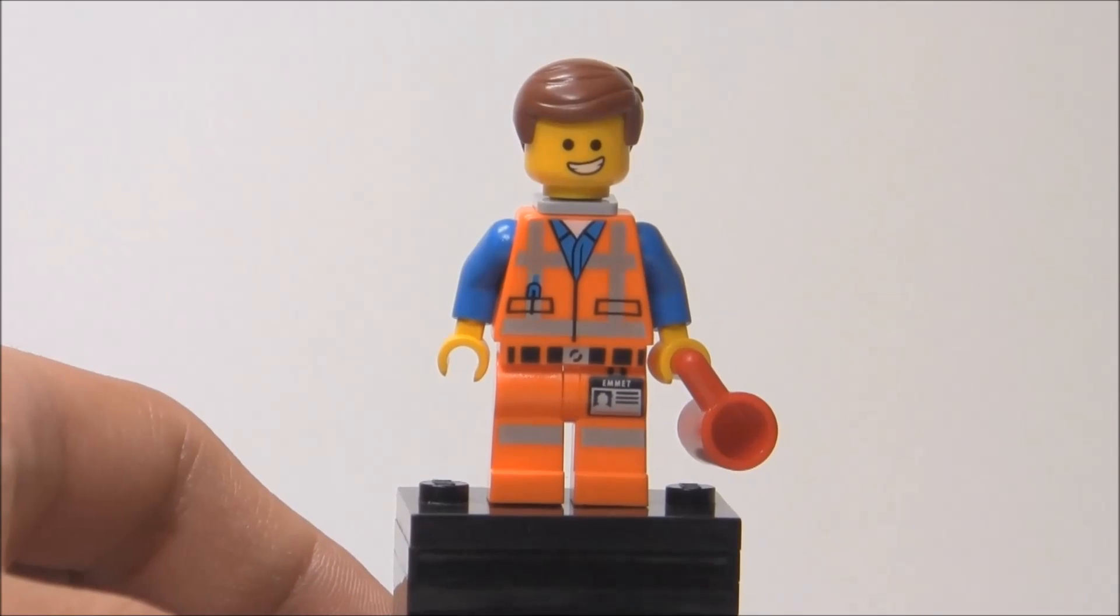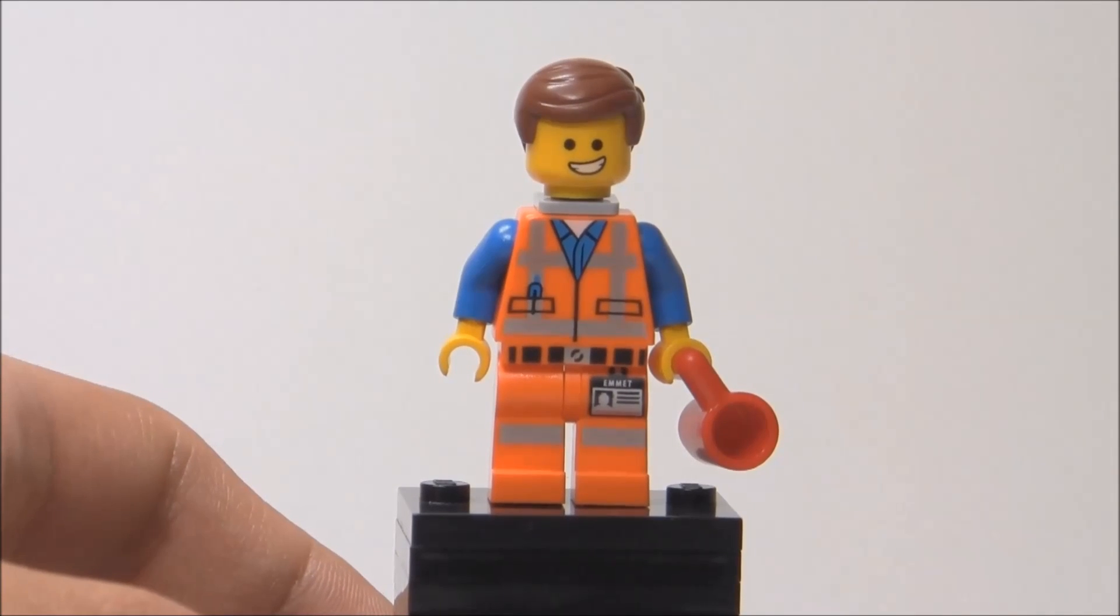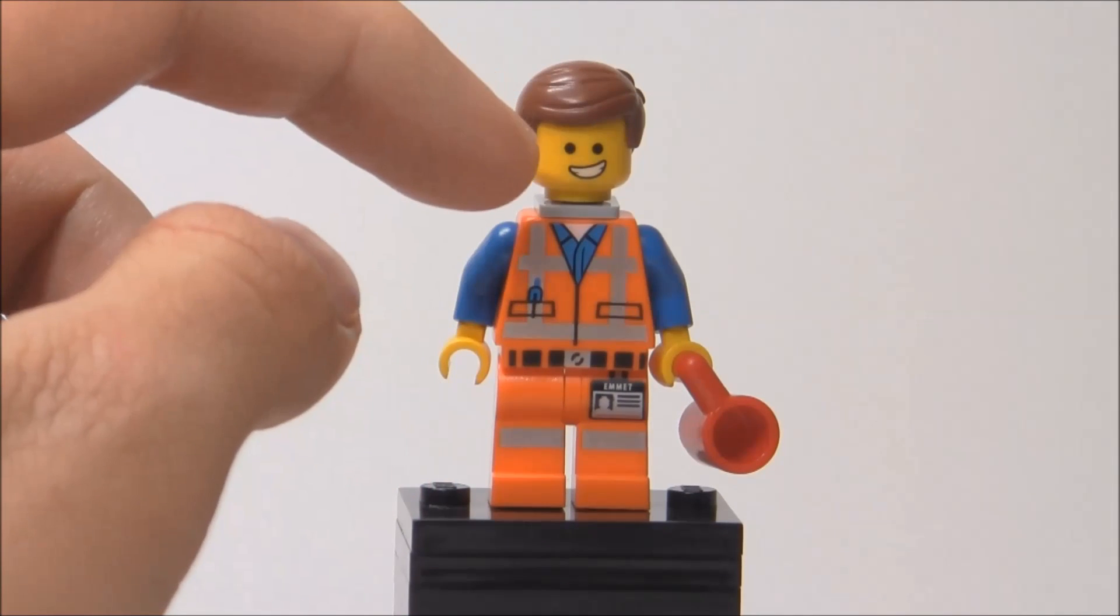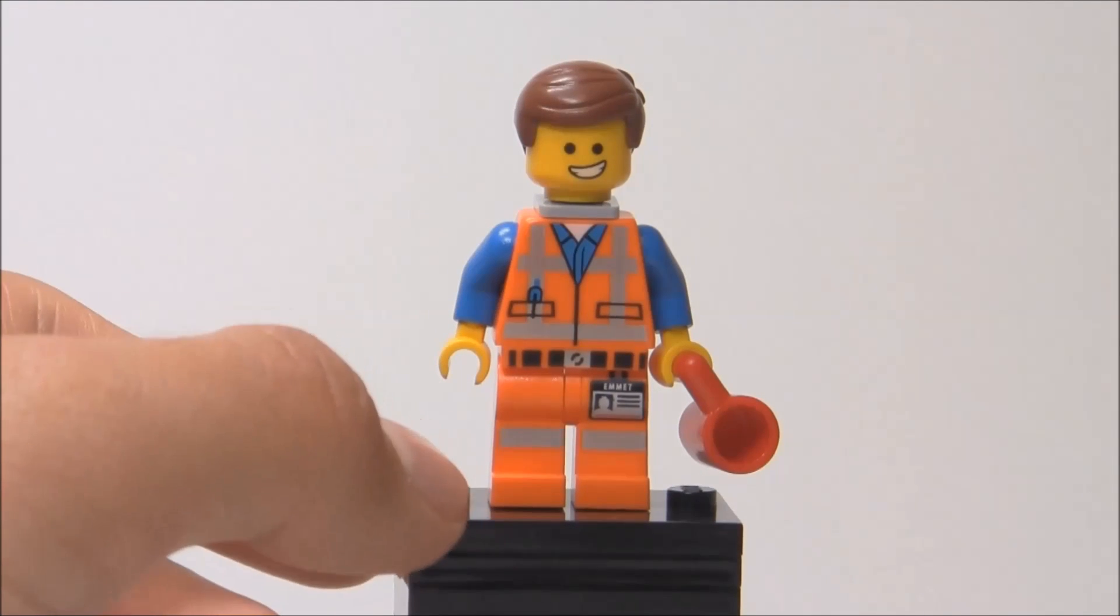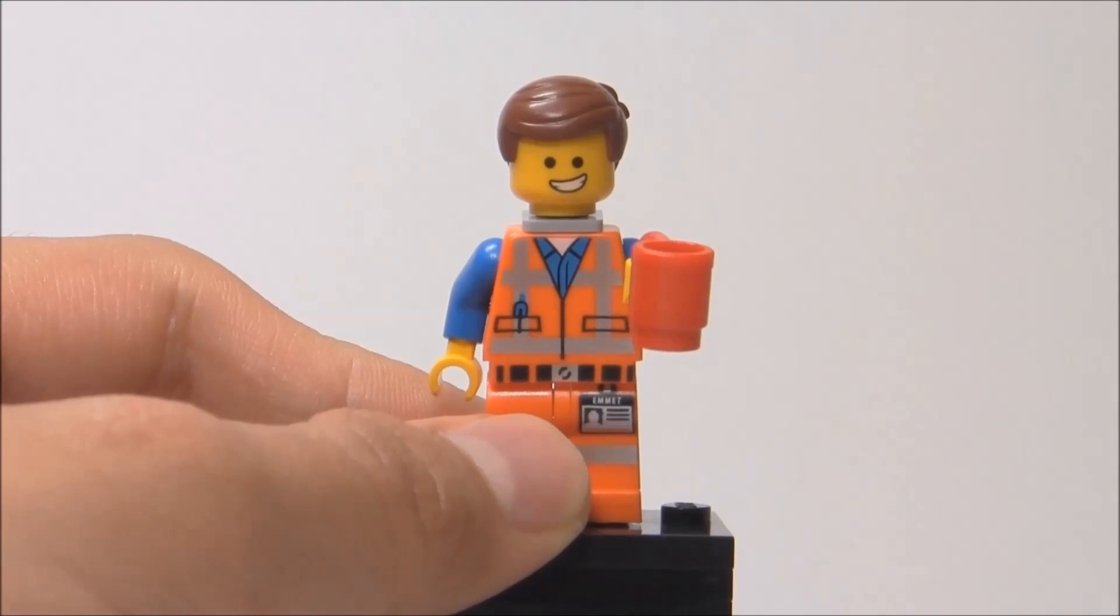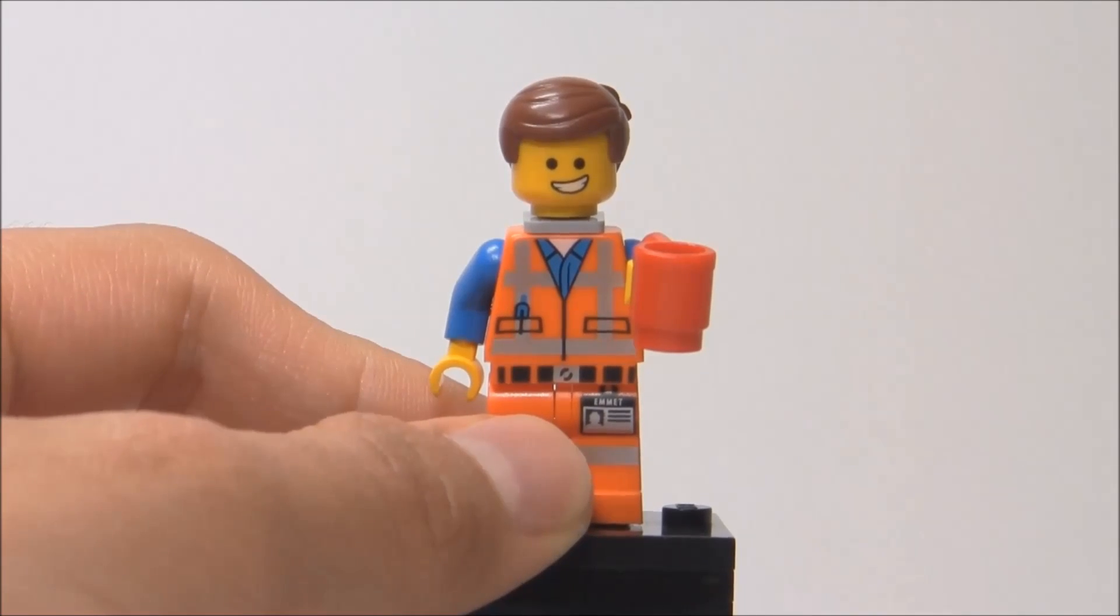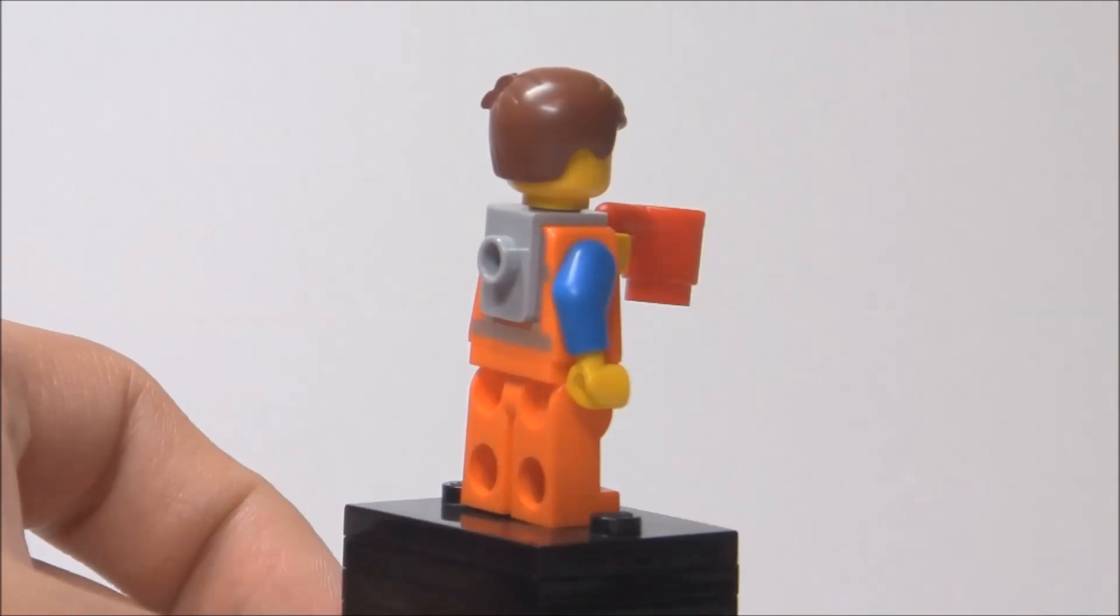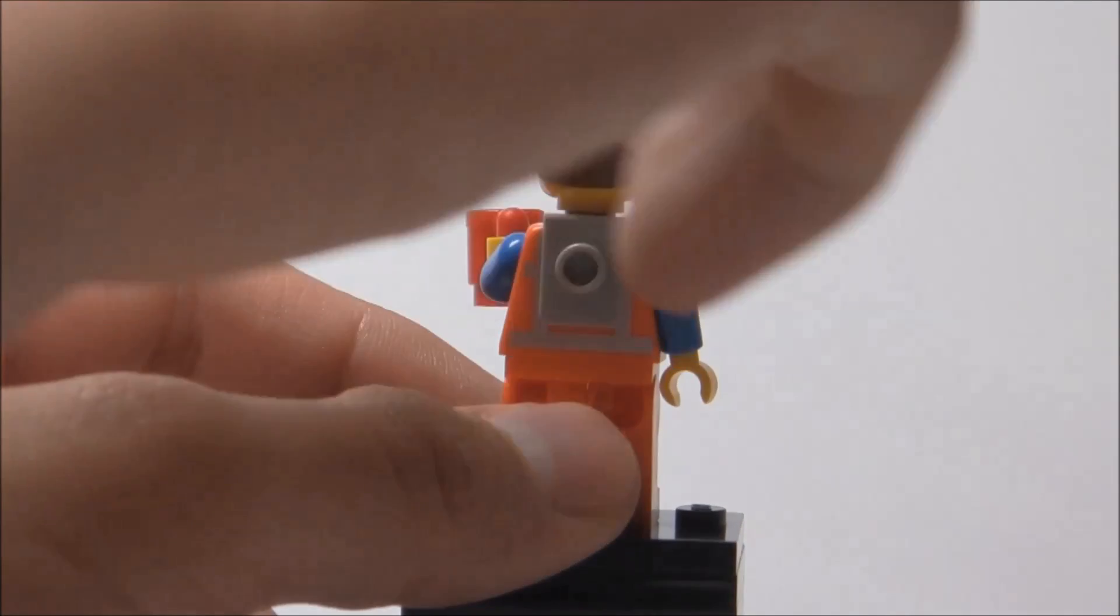Okay, so here is Emmett, and you can see his torso printing, facial printing, and leg printing just looks fantastic. I love the Emmett minifigure. He does have that very smiley face, and this is the same version found in Cloud Cuckoo. Cloud Cuckoo doesn't really have this little cup right here, which I don't really know why they added that in the set. Maybe just to raise up the piece count or something. But it's not even in the film in this scene.